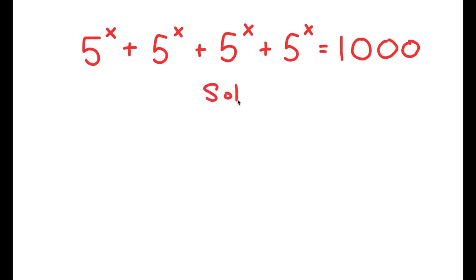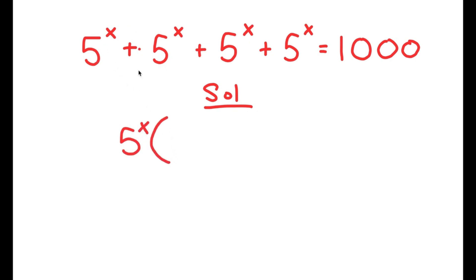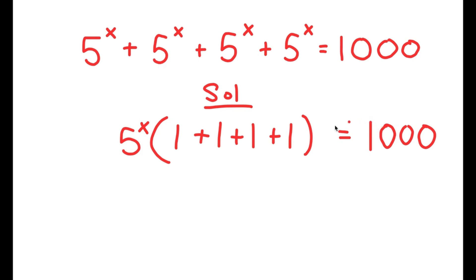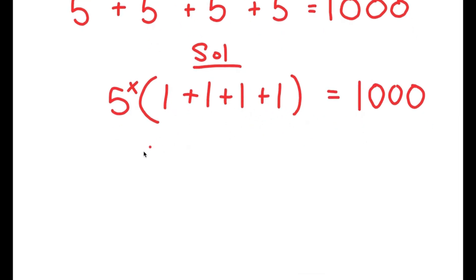For my solution, I'm going to first start by factoring out 5 to the power of x from my left-hand side. As you can see, we have 4 of the same terms on the left-hand side, and the easiest way to solve this is to factor them out. So I get 5 to the power of x times 1 plus 1 plus 1 plus 1, which equals 1000. And 1 plus 1 plus 1 plus 1 is 4, so I get 5 to the power of x times 4 is equal to 1000.